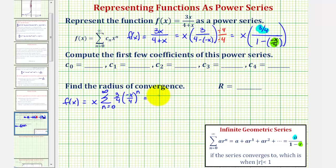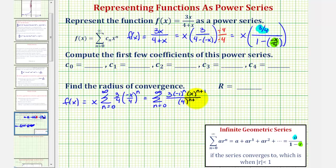Let's rewrite this as the summation from n equals 0 to infinity. We have the factor of 3, and for negative x raised to the power of n, we factor out negative 1 to the nth, leaving x to the power of n. Bringing in the extra factor of x gives x to the power of n plus 1. In the denominator, 4 to the nth times another factor of 4 gives 4 to the power of n plus 1. Since both x and 4 are raised to n plus 1, we can simplify to the summation of 3 times negative 1 to the nth, times x over 4 raised to the power of n plus 1.